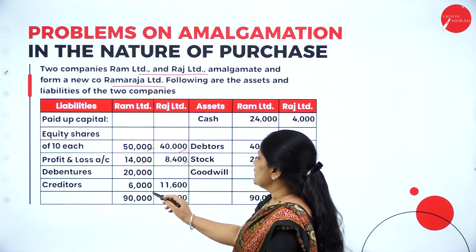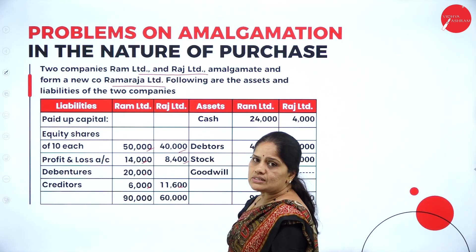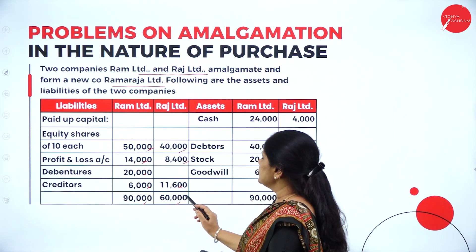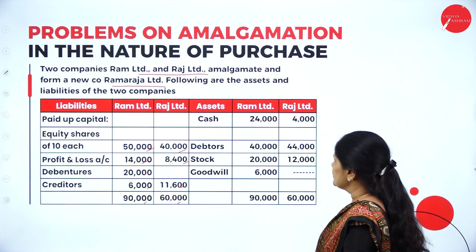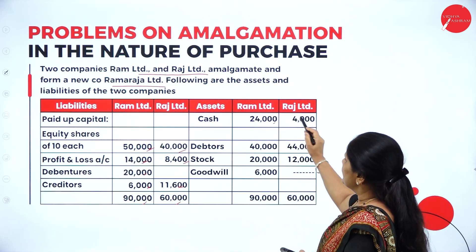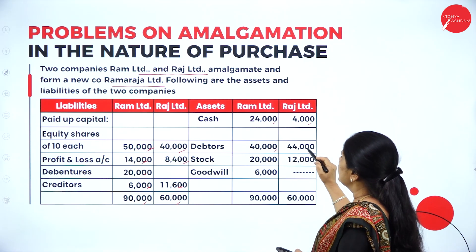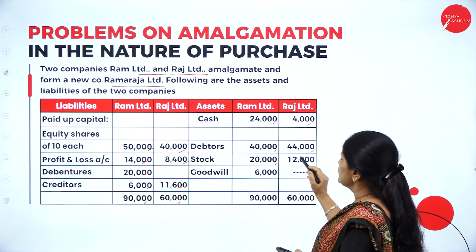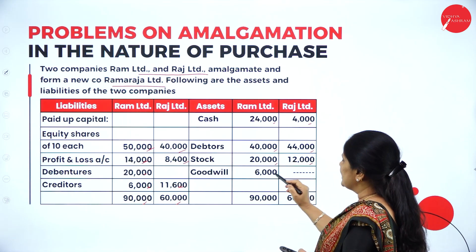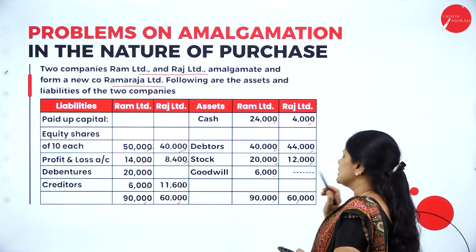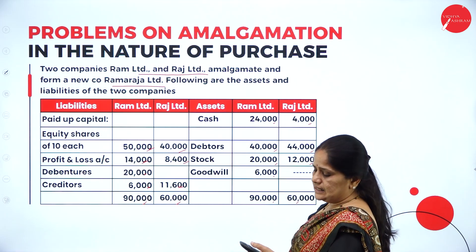Debentures 20,000, creditors 6,000 and 11,600. Total 90,000 and 60,000. For assets, we have cash 24,000 and 4,000, debtors 40,000 and 44,000, stock 20,000 and 12,000, goodwill 6,000. Total 90,000 and 60,000.